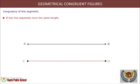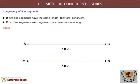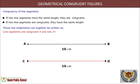Congruency of line segments: if two line segments have the same length, they are congruent. If two line segments are congruent, they have the same length. These two statements can together be written as: line segments are congruent if and only if their lengths are the same. Here, AB is congruent to CD, as AB equals CD equals 10 centimeters.